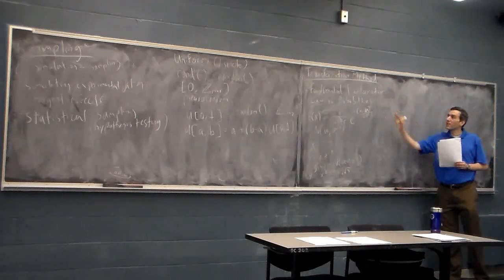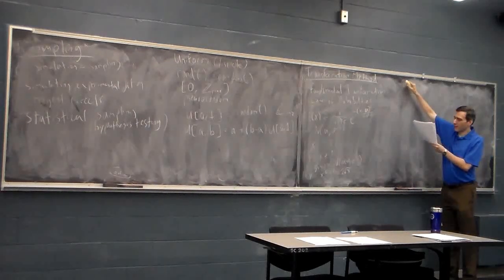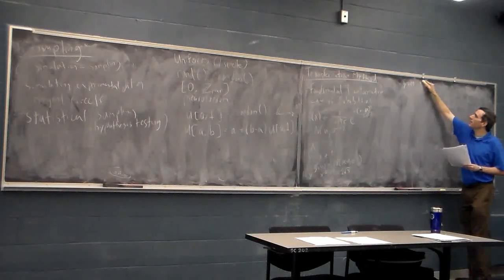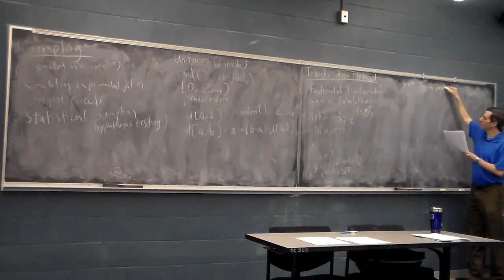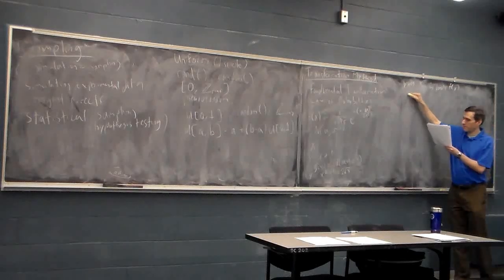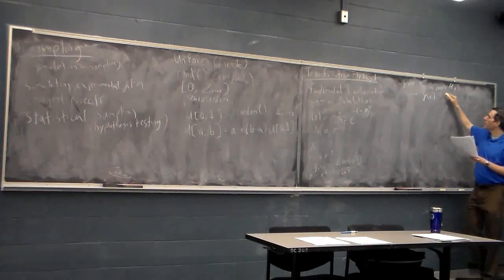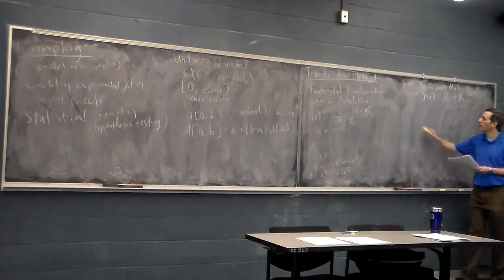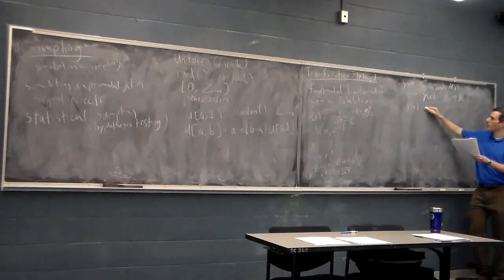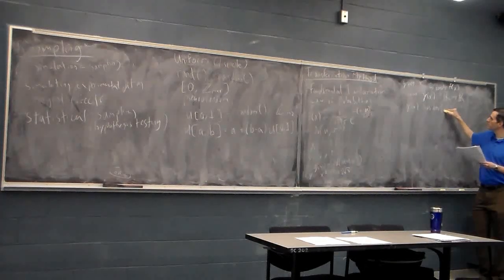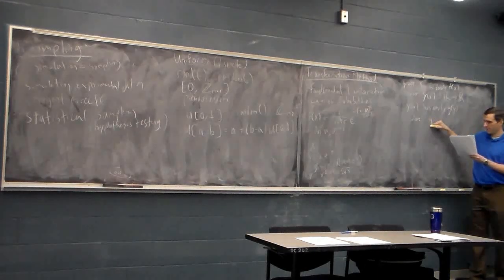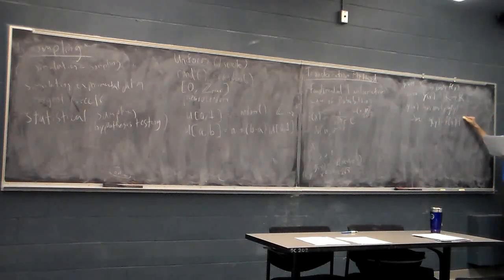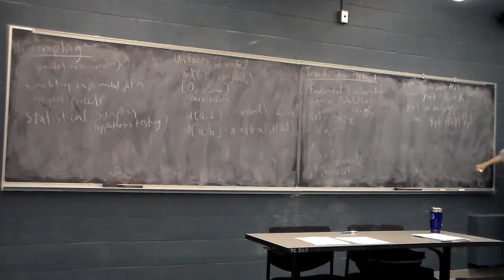The statement of the fundamental transformation law of probabilities is as follows. Given some random variable x with density f(x), and given a function y(x) mapping real numbers to real numbers, so that y is itself a random variable, then y has density g(y), where g(y) = f(x) |dx/dy|. That is the relationship between the densities of g and f, given that we know how y is generated from x.